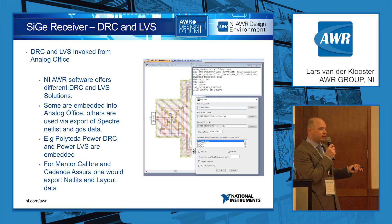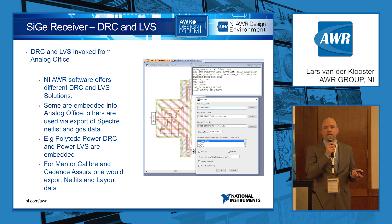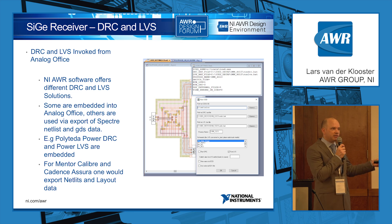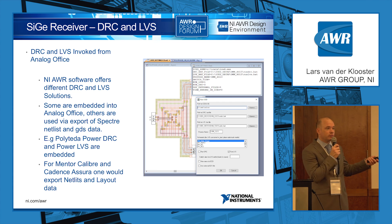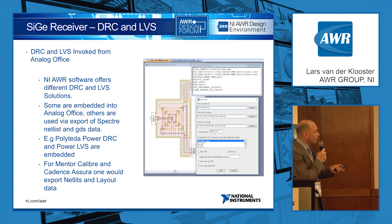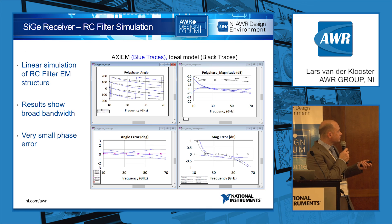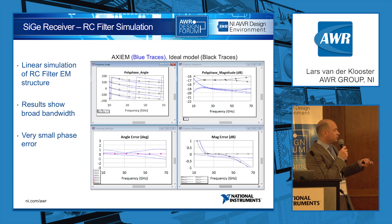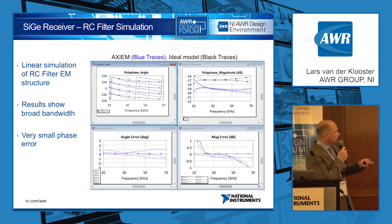The software has built-in DRC and LVS. DRC is design rule check — applying rules like minimum line width, minimum spacing, minimum via distance, and minimum via diameter. This is very important for designs with many components, which SiGe Germanium most of the time is. There are also connections with external DRC and LVS tools. Looking at the filter results, it performs well — the bandwidth is more than needed, and between the design frequencies it's quite flat compared to the ideal model shown with black lines, both in angle and in magnitude.